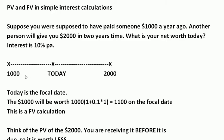The time difference between the thousand dollars and today is one year, and the time difference between today and the receipt of the two thousand dollars is two years.